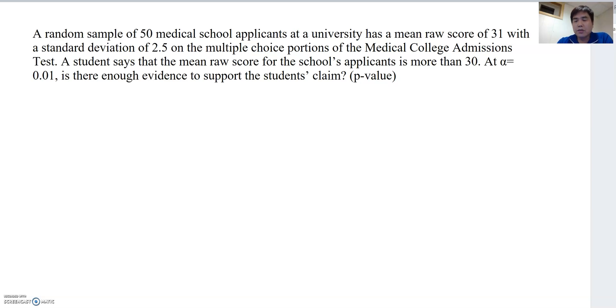Let's continue with another hypothesis test example. A random sample of 15 medical school applicants at a university has a mean raw score of 31 with a standard deviation of 2.5 on the multiple choice portion of the Medical College Admissions Test. A student says the mean raw score for the school's applicants is more than 30. At alpha equal to 0.01, is there enough evidence to support the student's claim?